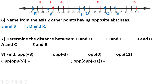Part seven: determine the distances. The distance from D to O: counting the spaces, one through ten, so the distance is 10. From O to E: one through six, the distance is 6. From B to O: one through eight, the distance is 8. From A to C: one through seven, the distance is 7. From E to R: one through four, the distance is 4. Remember, distance is always positive.